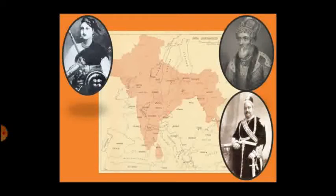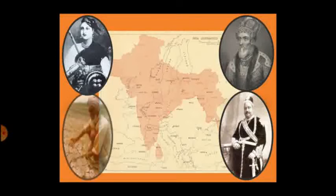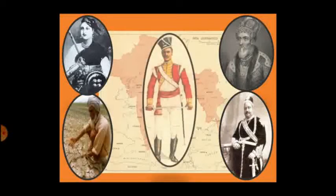When the East India Company established power in India, it affected the life of kings, queens, landlords, peasants, and the sepoys as well. Many of them revolted against the English East India Company, but as the revolts were localized, they were crushed by the British easily. Let us learn a few of the reasons responsible for the outbreak of the Revolt of 1857.